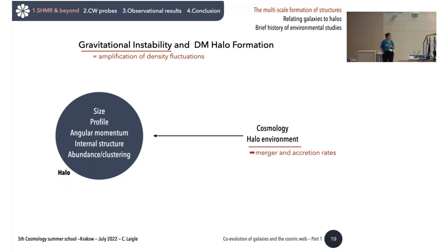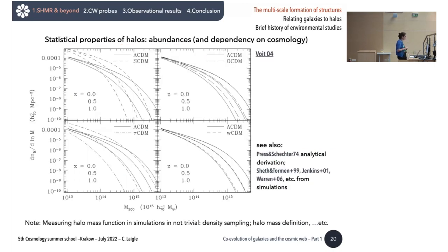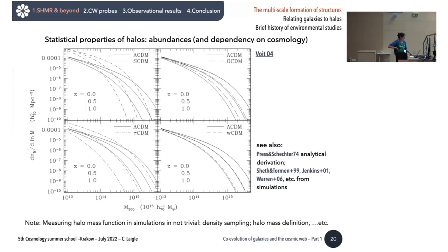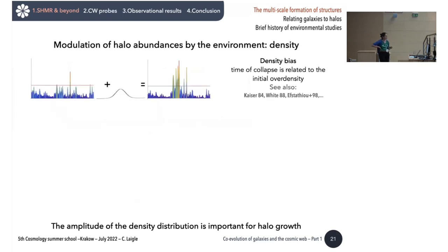Here is an illustration of how cosmology shapes the mass function, showing extreme cases: Lambda-CDM, open CDM with no dark energy but open universe with omega_matter of 0.3, SCDM with omega_matter equals one and no dark energy, and an evolving universe with dark energy. The point is that you get different mass functions when you switch between cosmologies. But beside cosmology, what also shapes the mass function is the environment.